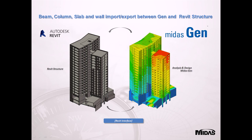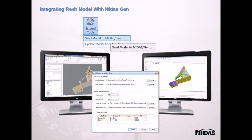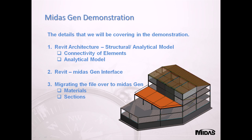MIDAS GEM has a good interaction with Revit Structure. The multi-storey building shows that all the beams, columns, slabs, slab openings, foundations and materials are all brought over into MIDAS GEM. Here you see the direct link between Revit and MIDAS GEM — the dialog box appears with options for file location, units and material properties. This is a very fast and effective way of communicating the model over to GEM.